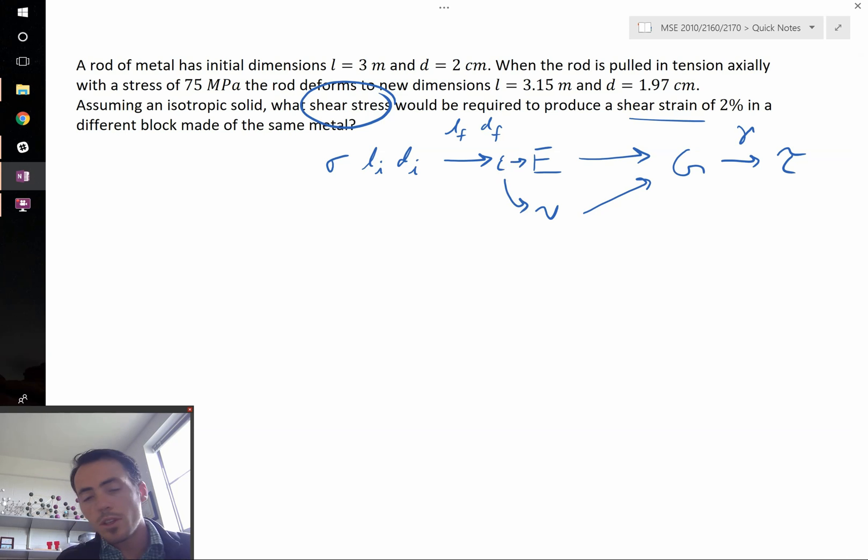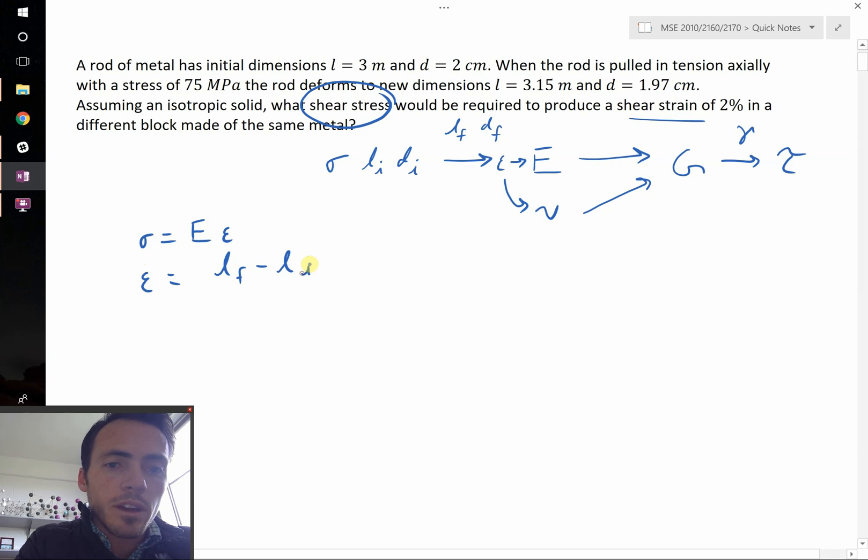So maybe the first thing to do is to determine what is the strain in the axial direction, that's in the longitudinal direction. So we can say that we know that stress equals strain times modulus, and we know that strain is equal to L final minus L initial divided by L initial. So we can go ahead and plug things in. This is 3.15 meters minus 3 meters divided by 3 meters. I left out the meters because they're going to cancel.